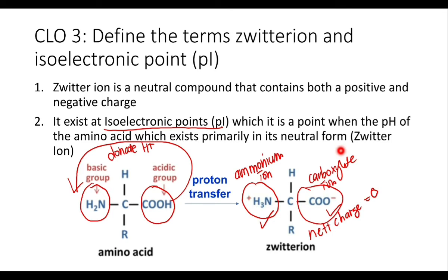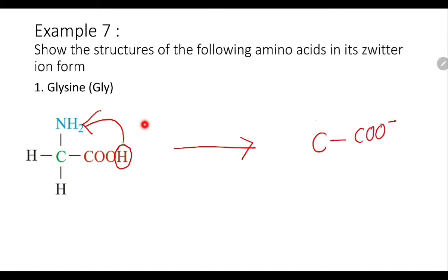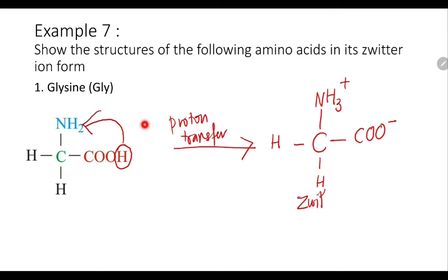Let's learn how to draw the zwitterion from a given amino acid formula. For glycine, which has hydrogen as the side chain, when it exists as a zwitterion there is a proton transfer: the H⁺ from the carboxyl group is donated to the amino group. The carboxyl group becomes COO⁻, the amino group NH₂ accepts the H⁺ and becomes NH₃⁺, and the rest of the atoms remain unchanged. This is the zwitterion of glycine.